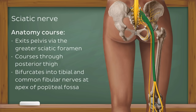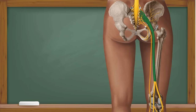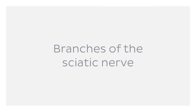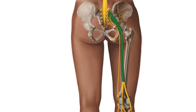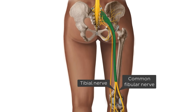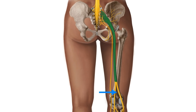Now that we're familiar with the origin and location of the sciatic nerve, let's move on to talk about its branches. It's worth noting that the sciatic nerve can also be described as two individual nerves bundled together in the same connective tissue sheath. The tibial and common fibular nerves usually separate at the apex of the popliteal fossa. However, in some individuals, these nerves can separate as soon as they leave the pelvis.